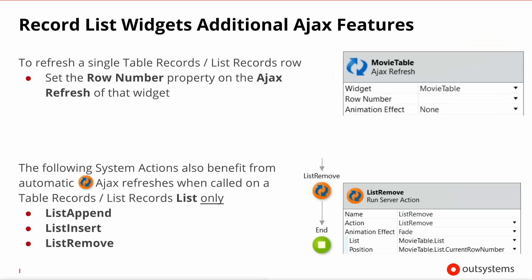In case you want to refresh just one particular row of your movie table, you can do so. You need to specify the second property, set the row number, and then the Ajax response will only send the payload — the HTML for that one row — rather than the whole table record.